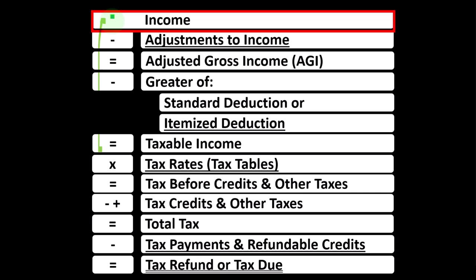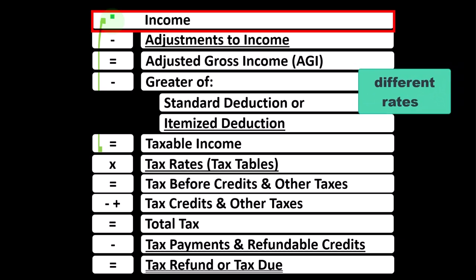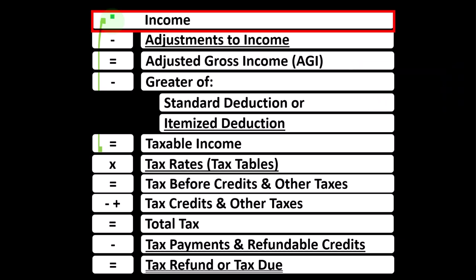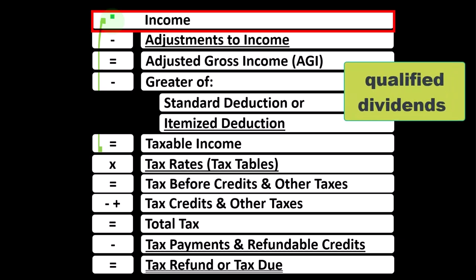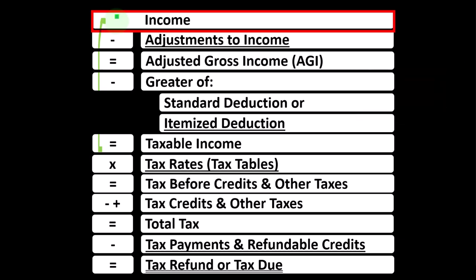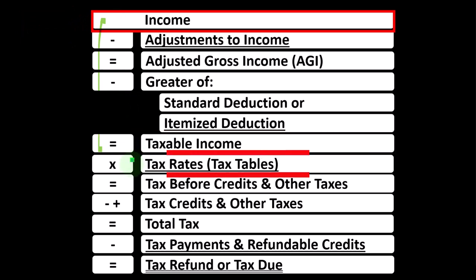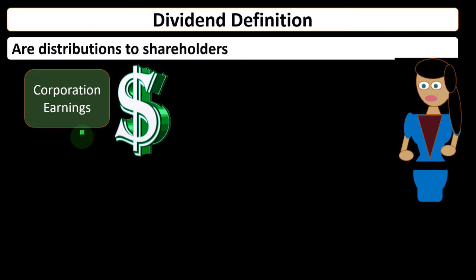Some sources of income might be taxed at different rates — often lower rates than ordinary income. Ordinary income is taxed at the default progressive tax rates. Some things, like qualified dividends, might be taxed at lesser progressive rates. This creates a complication in calculating the tax, because we're not just applying the progressive tax rates — we have to break out sources of income subject to a different tax system.